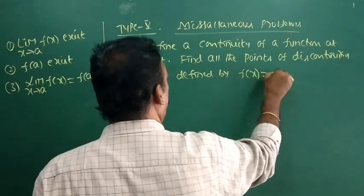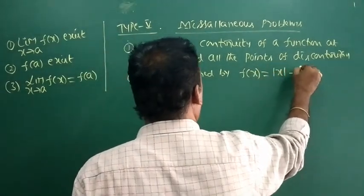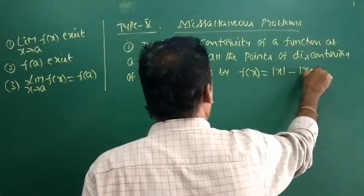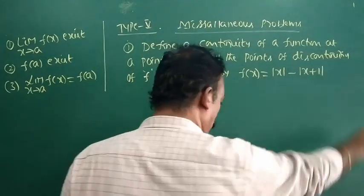f of x is equal to mod x minus modulus of x plus 1.